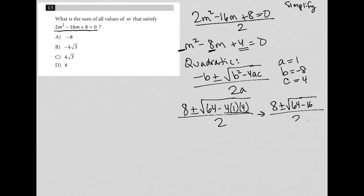64 minus 16 is 48. So I have 8 plus or minus the square root of 48 all divided by 2.